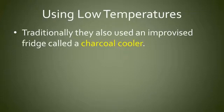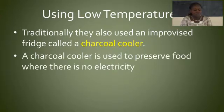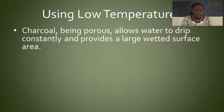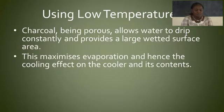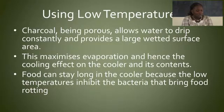This was not a fridge; it was called a charcoal cooler. A charcoal cooler is a storage device similar to a refrigerator. It is used to preserve food in areas where there is no electricity. It uses charcoal and water to remain cool. Water drips constantly onto the charcoal, which being porous presents a large wetted surface area. This maximizes evaporation and hence the cooling effect on the cooler and its contents. Food can be stored in this charcoal cooler for long without going bad, because it inhibits the bacteria that bring about food rotting.